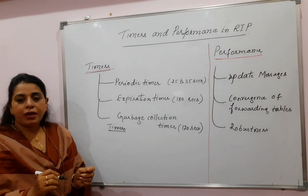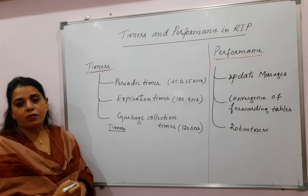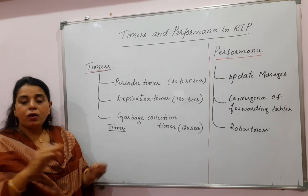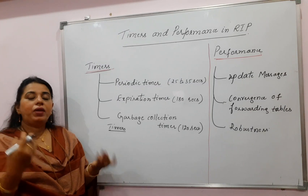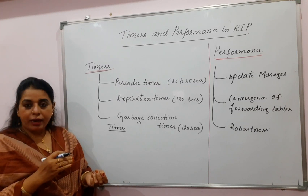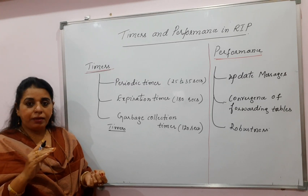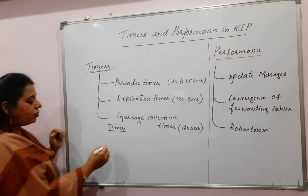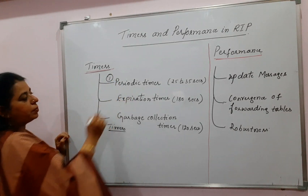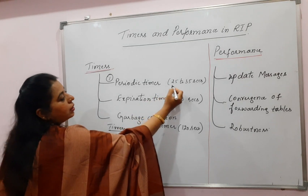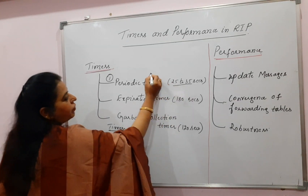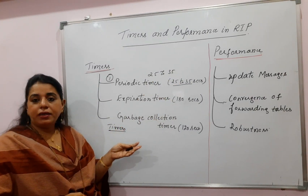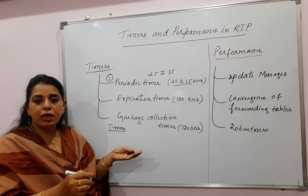RIP constructs the forwarding table based on the routing information it receives from its neighbors. In an autonomous system there are several routers, and every router wants to send its routing information to their neighbors. When all routers try to send at the same time, it leads to very huge traffic in the network. For that reason, the first timer used is the periodic timer. Each router sets the periodic timer to a value in the range of 25 to 35 seconds. The router starts from value 35.